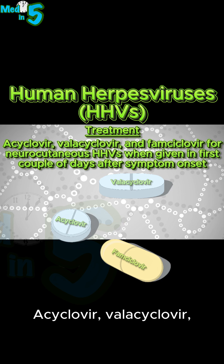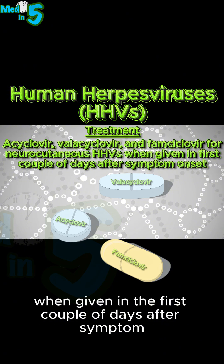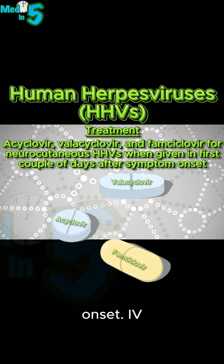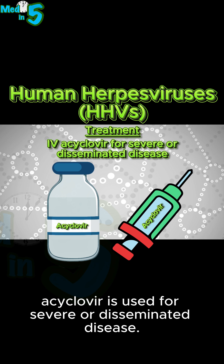Acyclovir, valacyclovir, and famciclovir are all effective against neurocutaneous HHVs when given in the first couple of days after symptom onset. IV acyclovir is used for severe or disseminated disease.